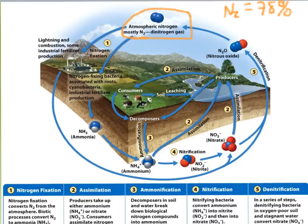We need some way to fix this nitrogen so that we can actually use it. This process involves taking atmospheric nitrogen, fixing it to a usable form, and then getting it back into the atmosphere as a cycle of matter. N2 is not a usable form for most living organisms, so we need to fix it. There are some living organisms that can fix nitrogen, mainly bacteria — bacteria that are closely associated with or in the root systems of different plants, beans, and some types of trees.